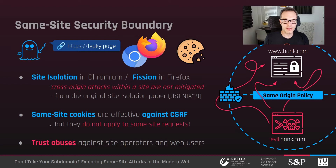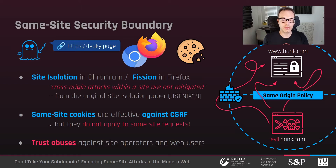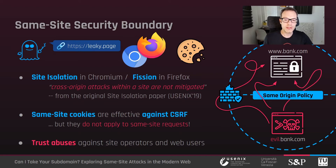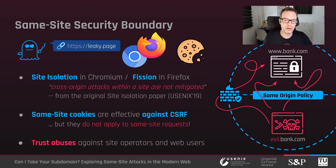Although two different origins under the same site are protected by the same origin policy, related domain attackers can abuse the trust put by browsers and end users on same-site content. For example, the site isolation mechanism implemented in Chromium, and recently also in Firefox, does not mitigate the leakage of same-site but cross-origin data via Spectre-based attacks. Similarly, SameSite cookies are an effective protection against cross-site request forgery from web attackers, but these restrictions do not apply to connections performed between related domains.